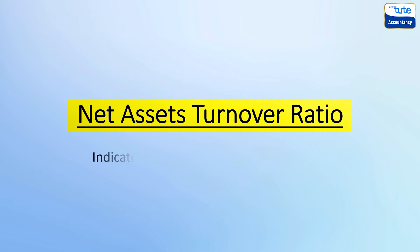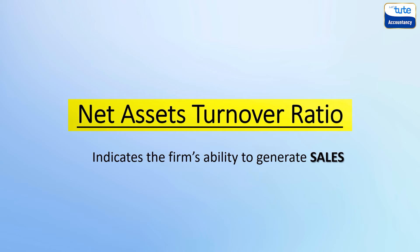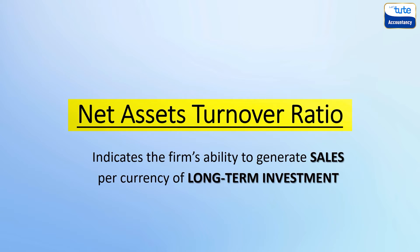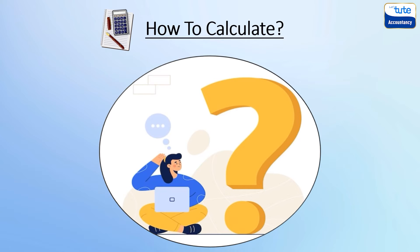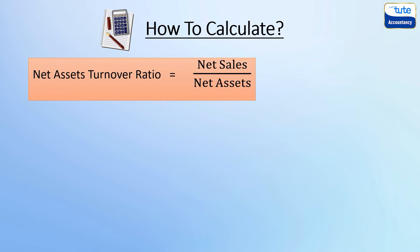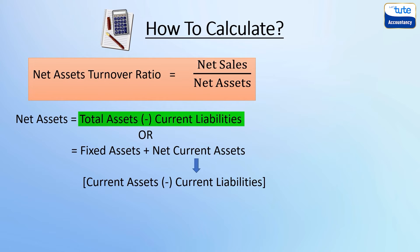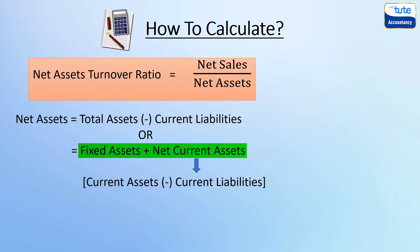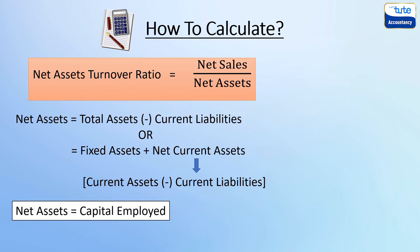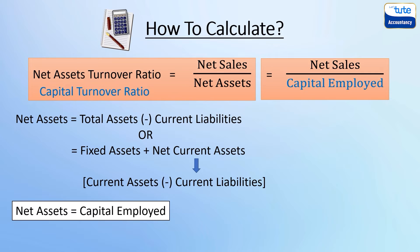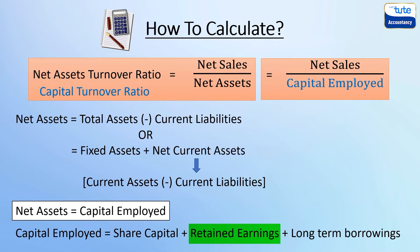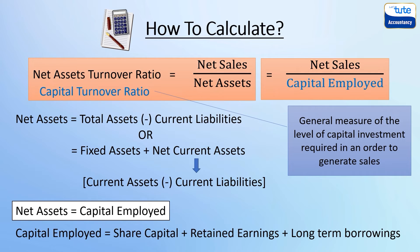Let's understand the net assets turnover ratio. This ratio indicates the firm's ability to generate sales per unit of currency of long-term investments and how efficiently the company is utilizing its capital employed. The formula is net sales divided by net assets. Net assets can be calculated as total assets minus current liabilities, or fixed assets plus net current assets. Since net assets equals capital employed, this ratio can also be termed the capital turnover ratio, using capital employed — which is total of share capital, retained earnings, and long-term borrowings.